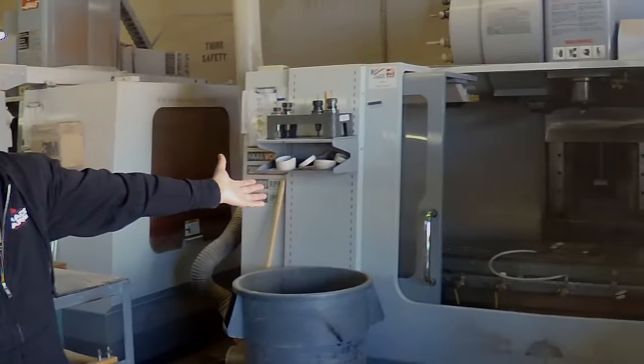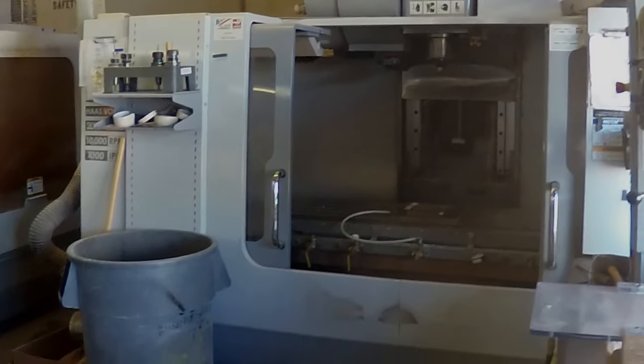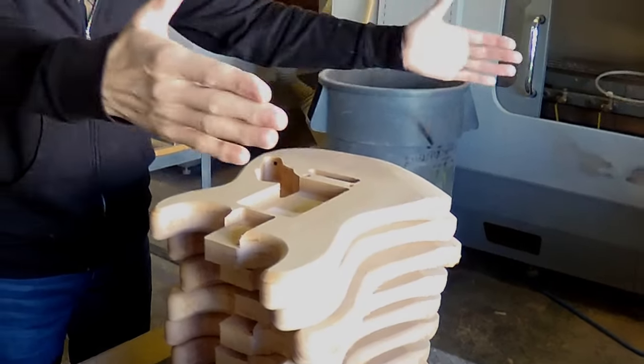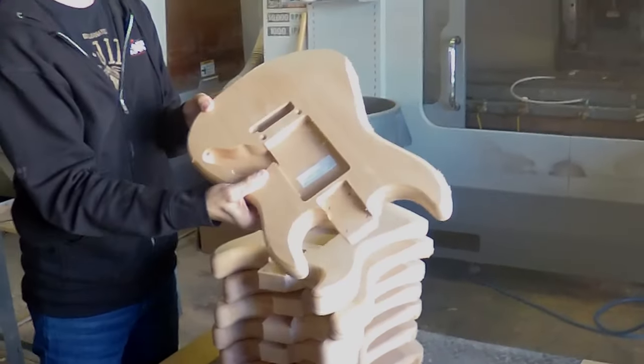This is the body CNC machine. As I'll show you in a little bit, we go to the wood room. They basically come out as big blocks, blanks, and they turn into this.